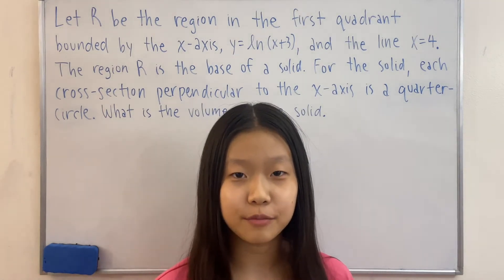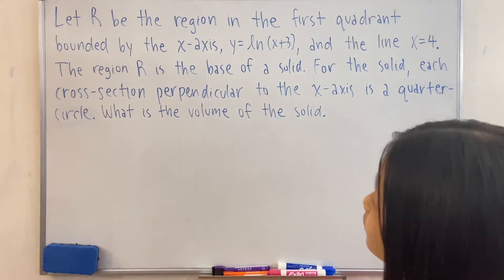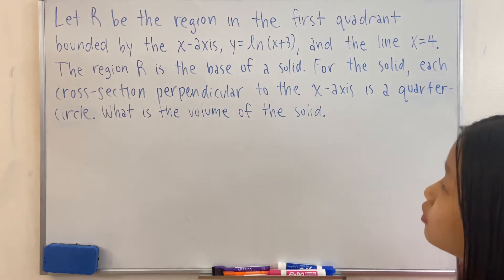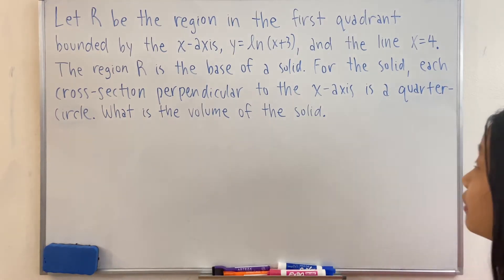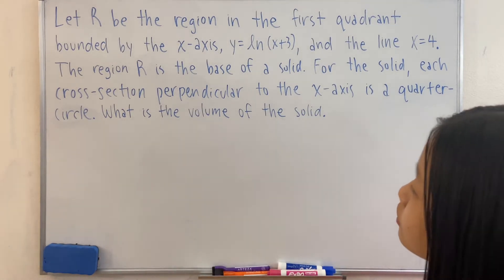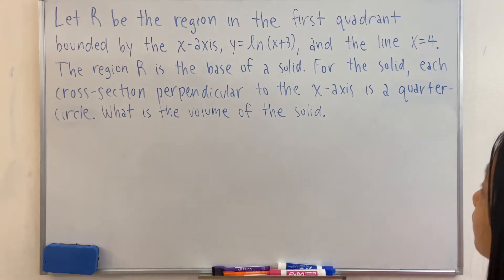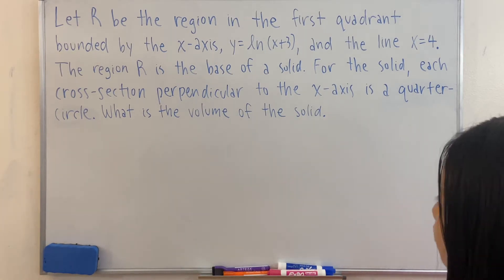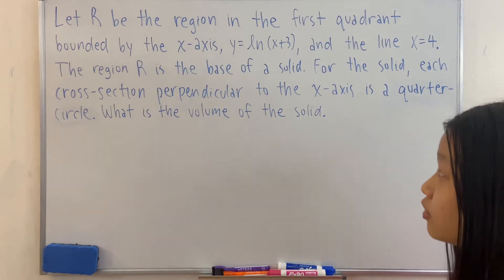Hello everyone, in this video we have a problem that says: let R be the region in the first quadrant bounded by the x-axis, y = ln(x+3), and the line x = 4. The region R is the base of a solid. For the solid, each cross-section perpendicular to the x-axis is a quarter circle. What is the volume of the solid?